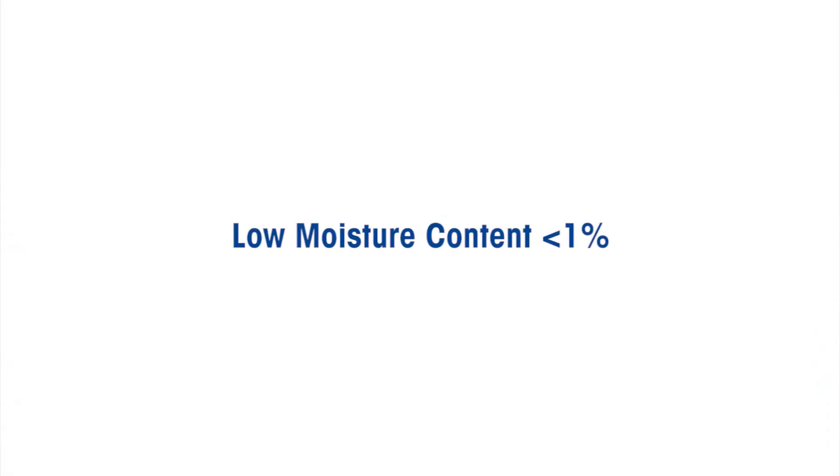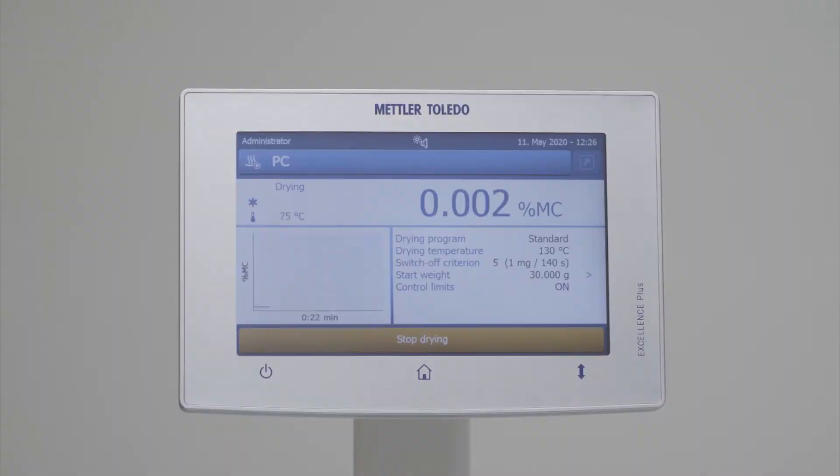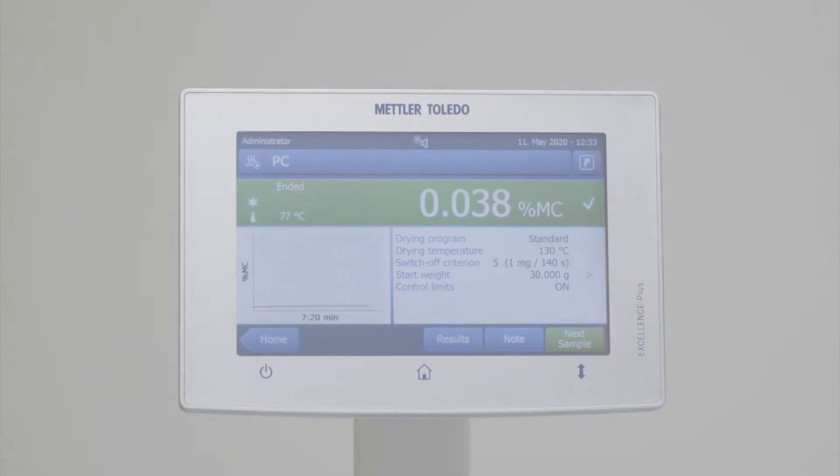To accurately measure moisture contents below one percent, a readability of three digits after the comma or 0.001 percent moisture content is important. If only two digits after the comma are displayed, the rounding error has a big influence.